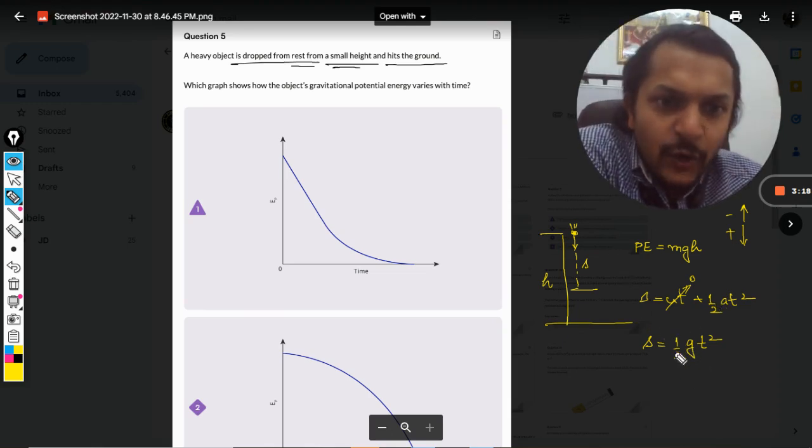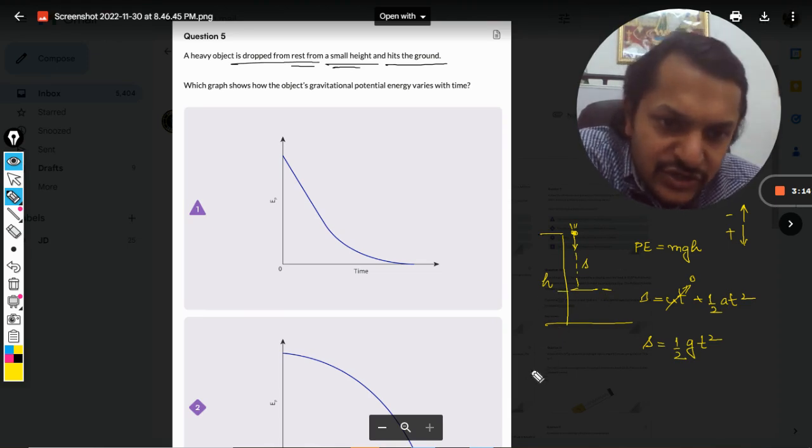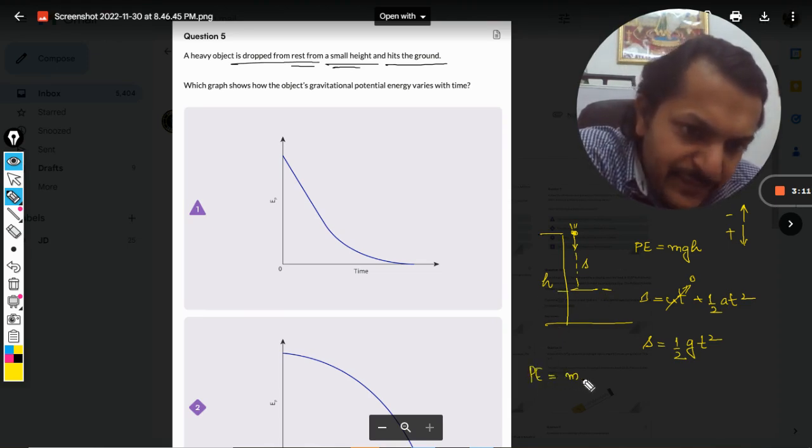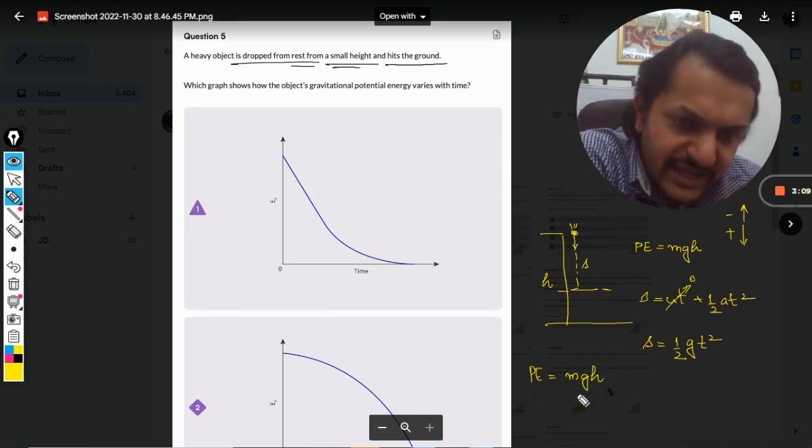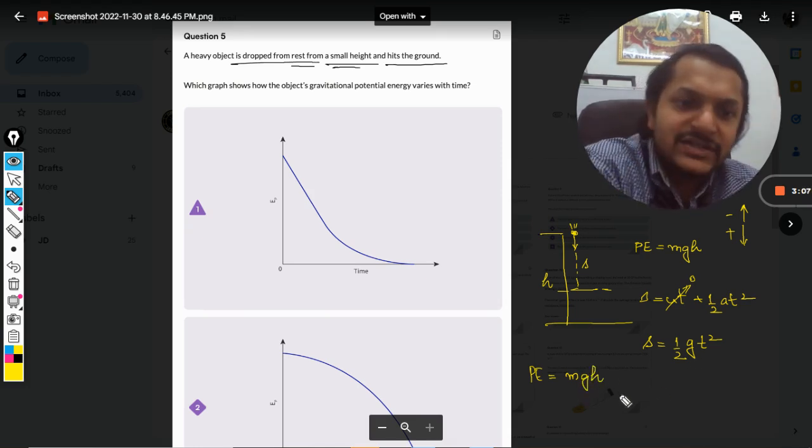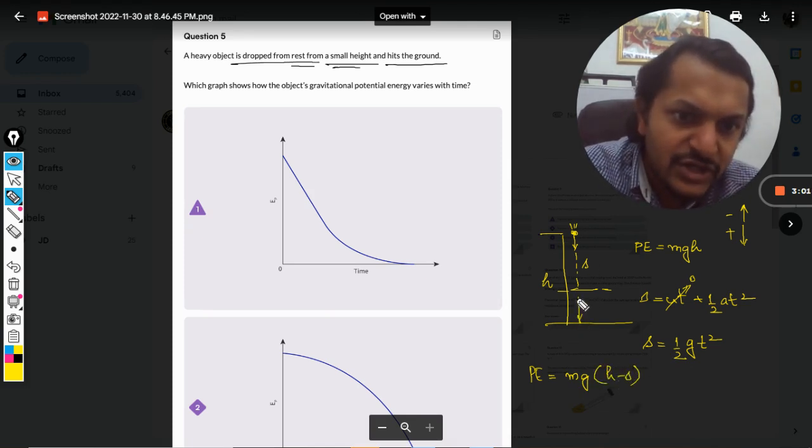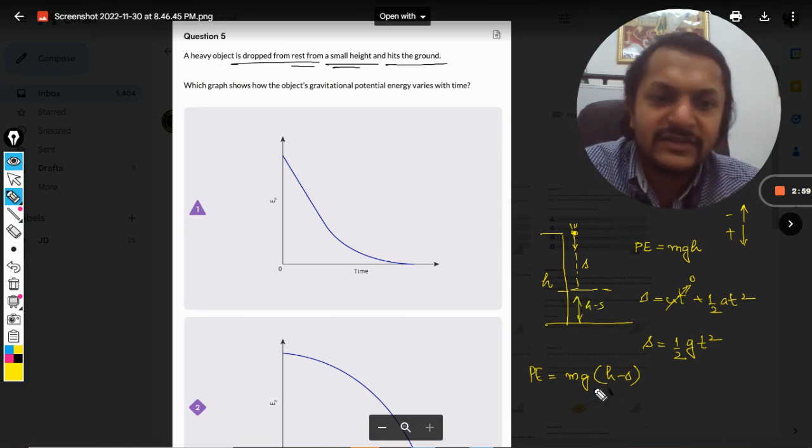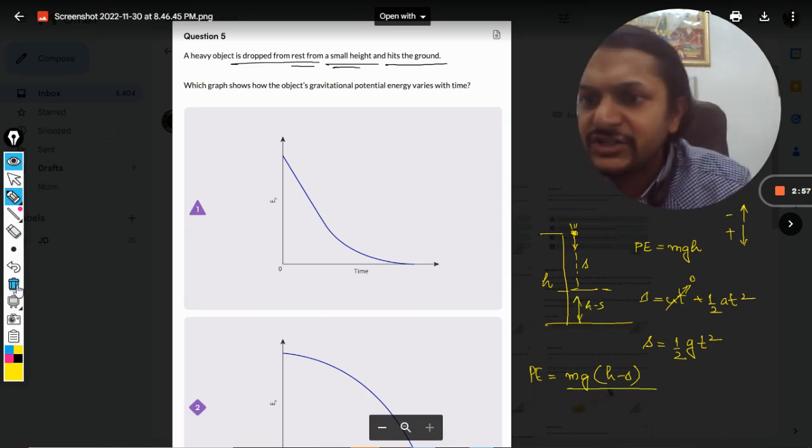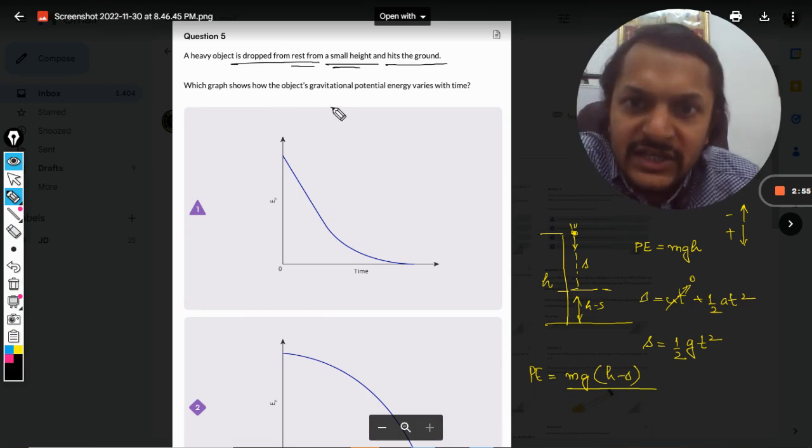So this is now S. What is the potential energy here? The potential energy here will be MG times H minus S. So S distance has been traveled. What is the remaining height? It is H minus S. So this is the potential energy, and the expression for potential energy will become: